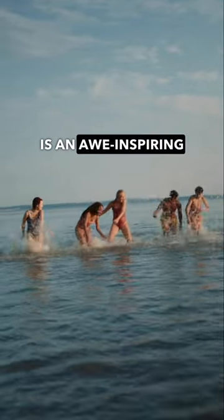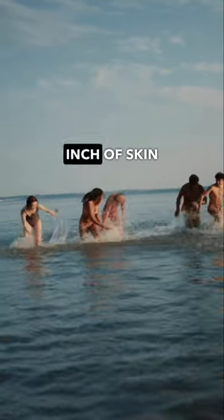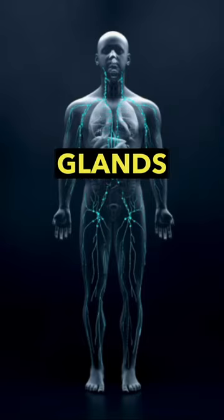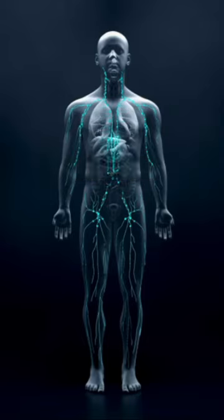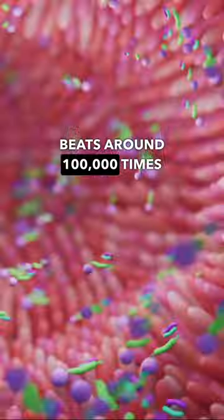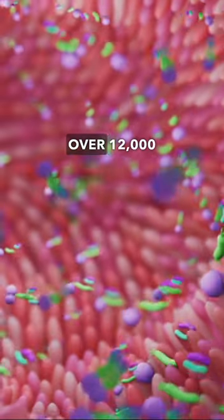The human body is an awe-inspiring marvel. Each square inch of skin holds 600 sweat glands and 1,000 nerve endings. Your heart beats around 100,000 times daily, pumping blood over 12,000 miles.